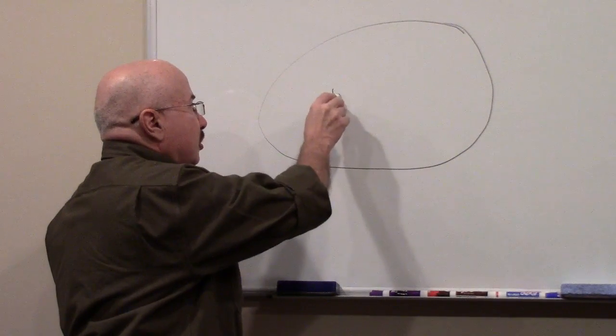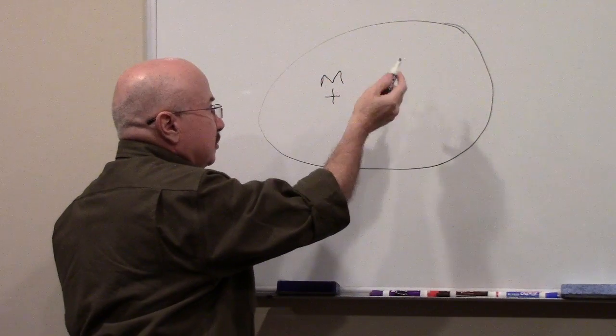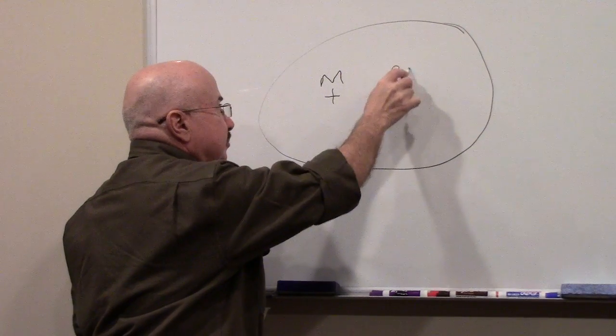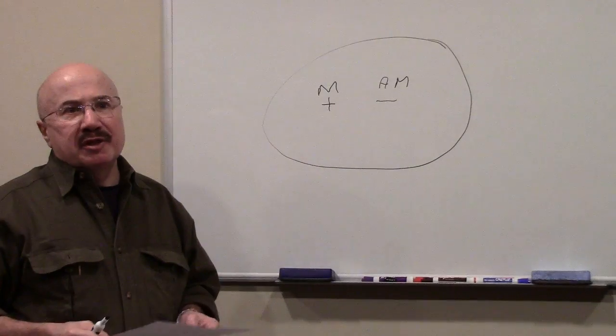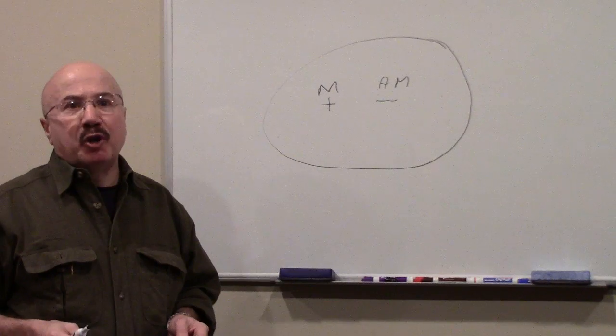So that you get a virtual particle that is matter and a virtual particle, I'm just going to use a myosin to represent it, that's antimatter. Now in reality, we don't really see the virtual particles in a vacuum, but we see their effects. We know they're real.